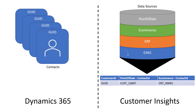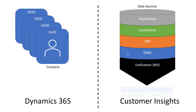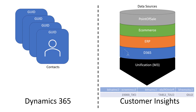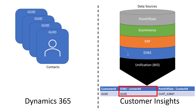We need to go through unification, and in the end we'll have our new customer table, which will have that same GUID that Customer Insights assigns, but we'll also have the contact ID that came over from Dynamics 365 — and that will be the GUID that is over in Dynamics.